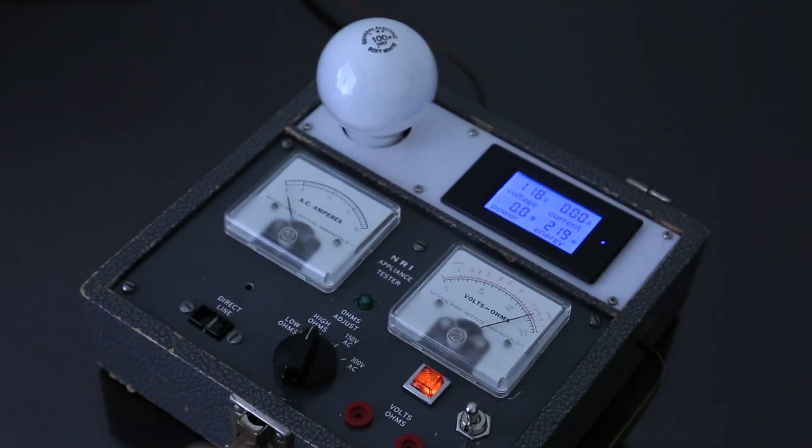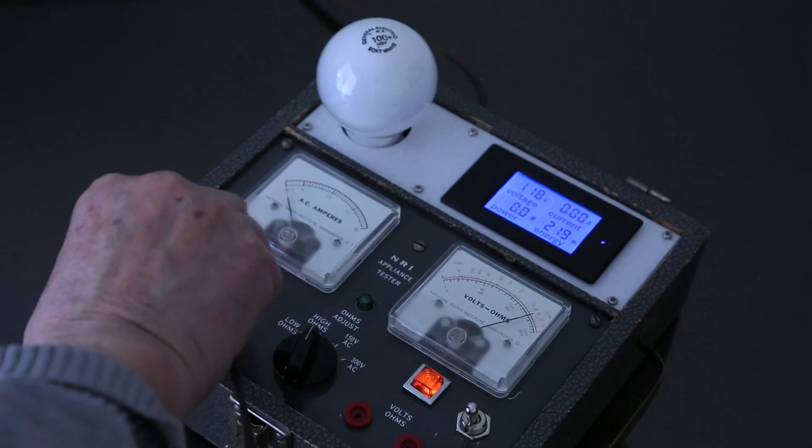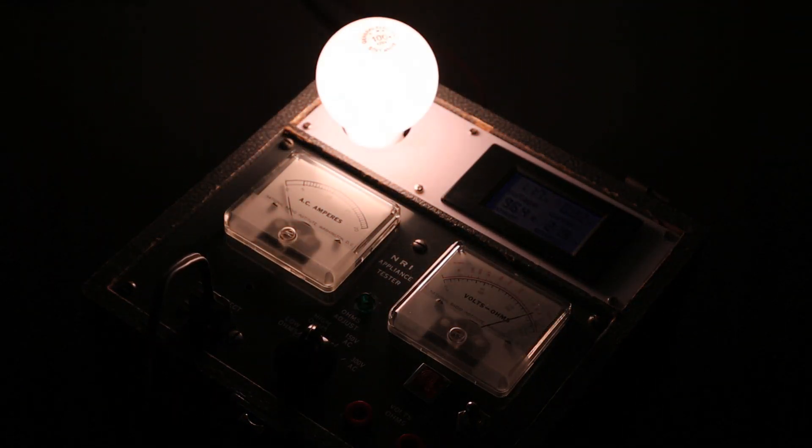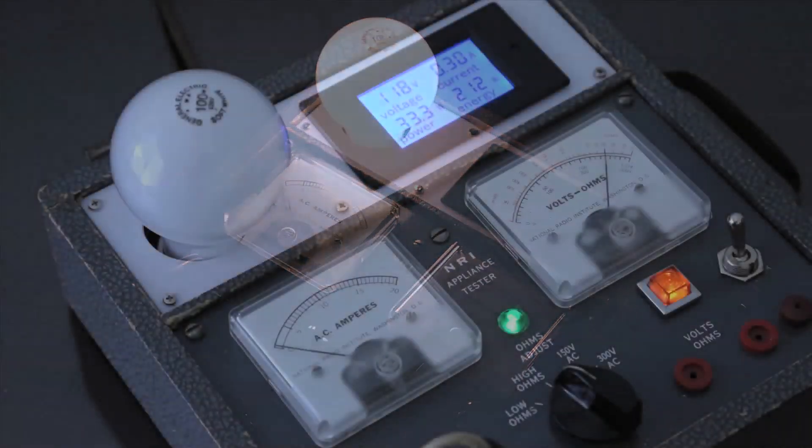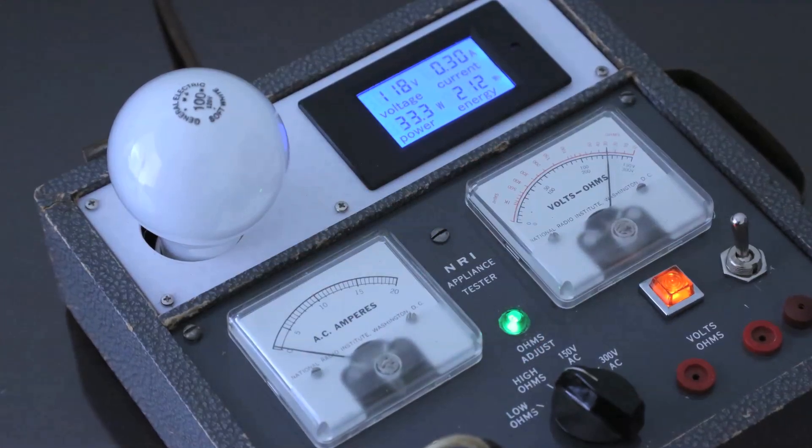By using the dim bulb tester, you can check your equipment without fear of blowing a line fuse in case of accidental short. The dim bulb tester is a safety and handy gadget. I recommend that you should have it on your workbench.